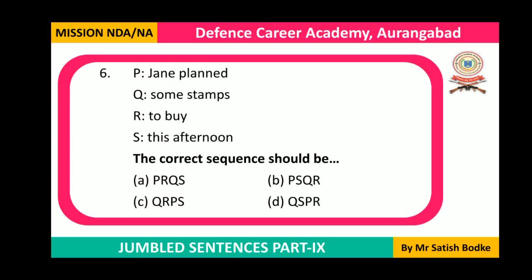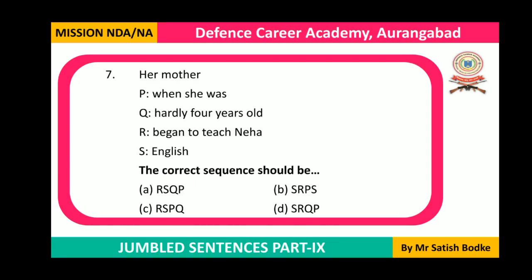Question number six: Jane planned to buy some stamps this afternoon. The correct sequence is PRQS, which is option E. Our answer is option E.